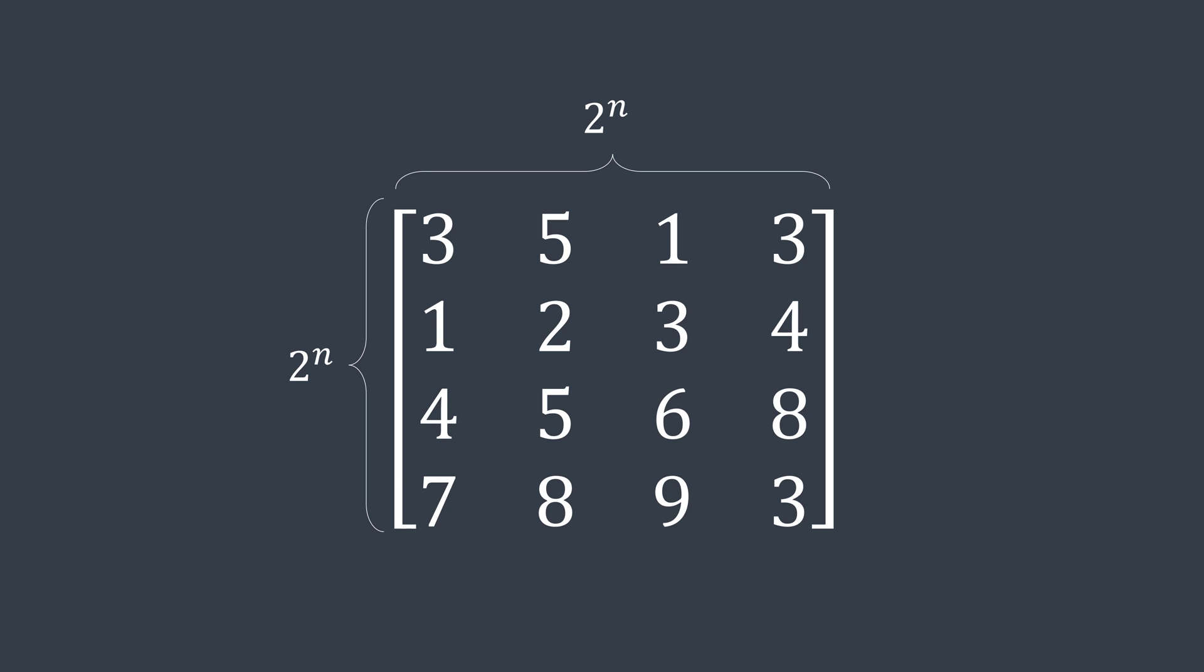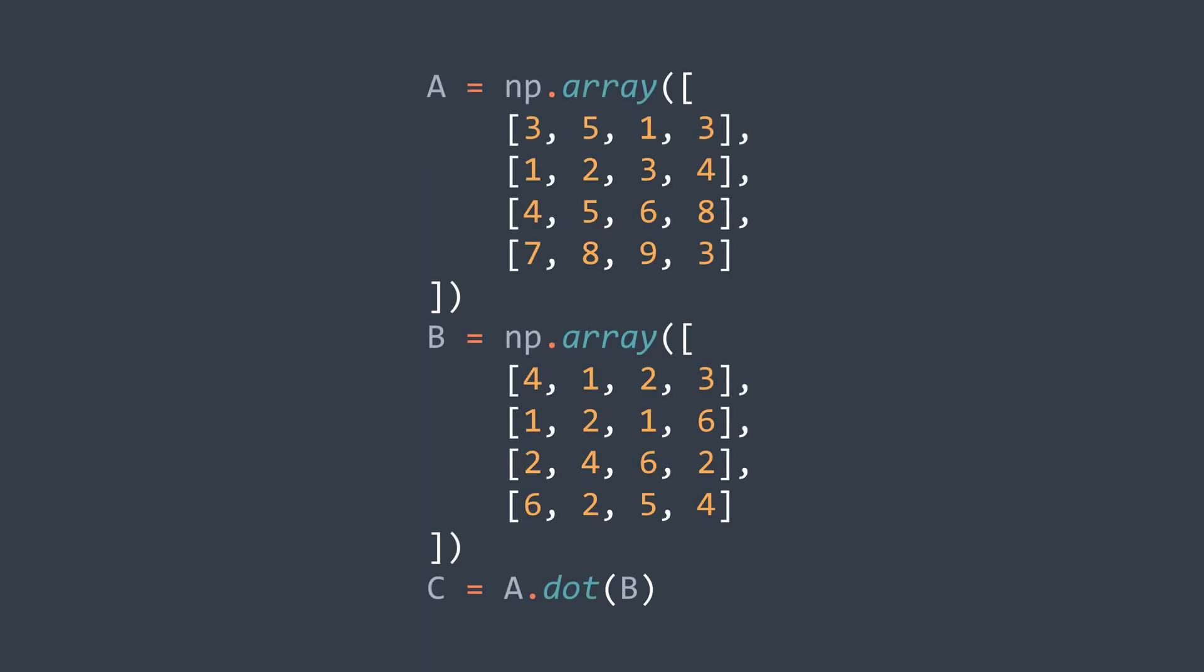Last thing, Strassen algorithm works with square matrices whose size is a power of two. So if we want to multiply matrices that don't respect these conditions, we'll have to find a way to make them adapt. For example, by adding zeros or by cleverly splitting them. And obviously, if you need to multiply matrices in practice, just use a built-in method like NumPy in Python.